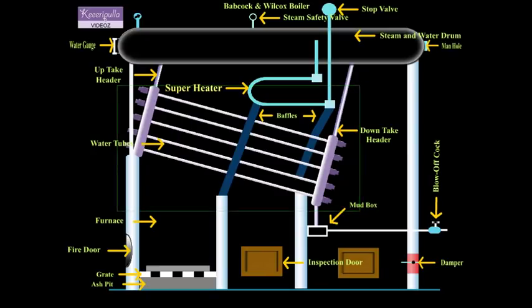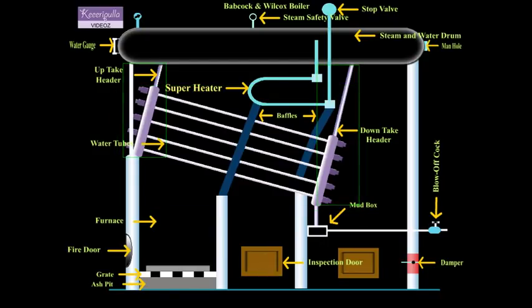Uptake Header and Downtake Header: The two headers are the ends which are connecting the water tubes. They are connected with bolts. Through the uptake header, the water circulates upwards and through the downtake header, the water circulates downwards.